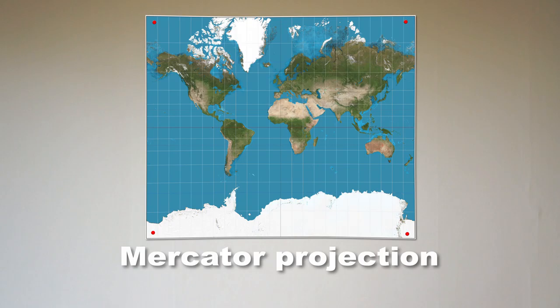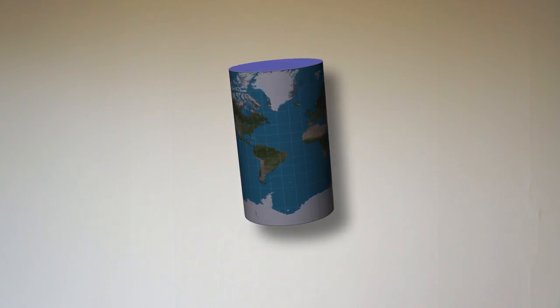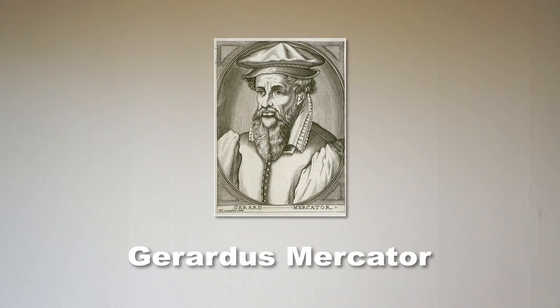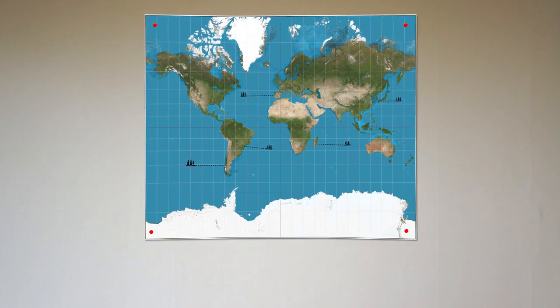The Mercator projection is a cylindrical map projection presented by the Flemish geographer and cartographer Girardus Mercator in 1569. It became the standard map projection for nautical purposes because of its ability to represent lines of constant course. So it's really handy for navigating at sea, but it's horrible at depicting the right sizes between countries.